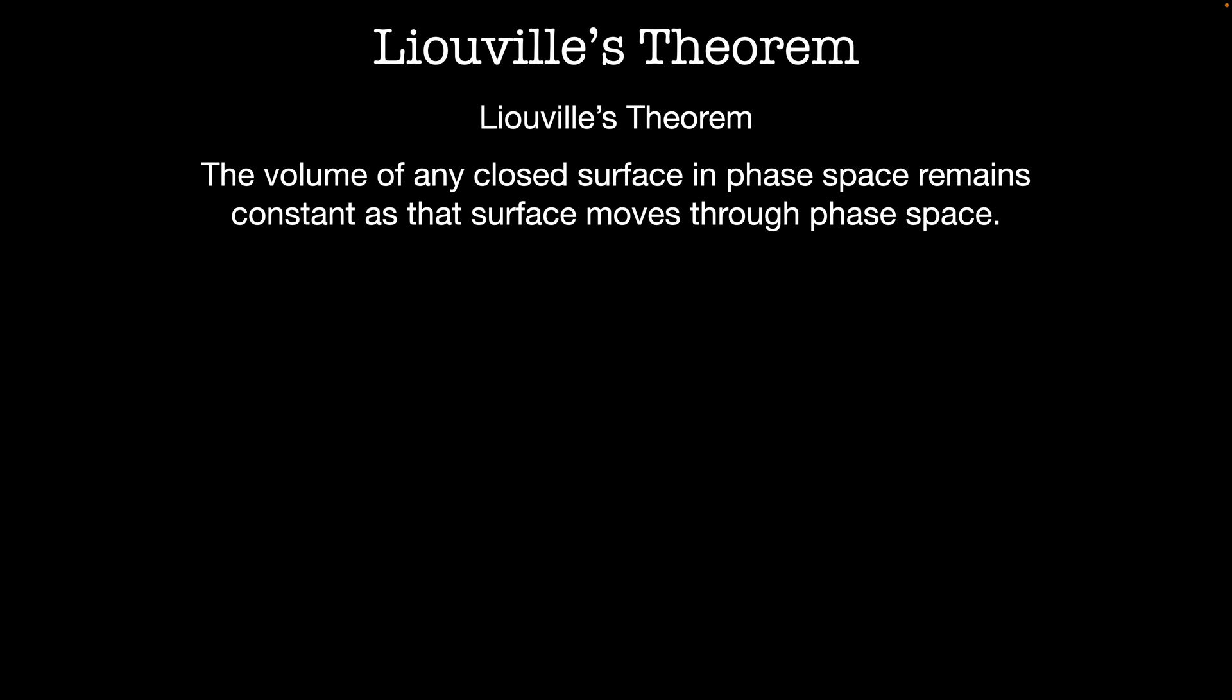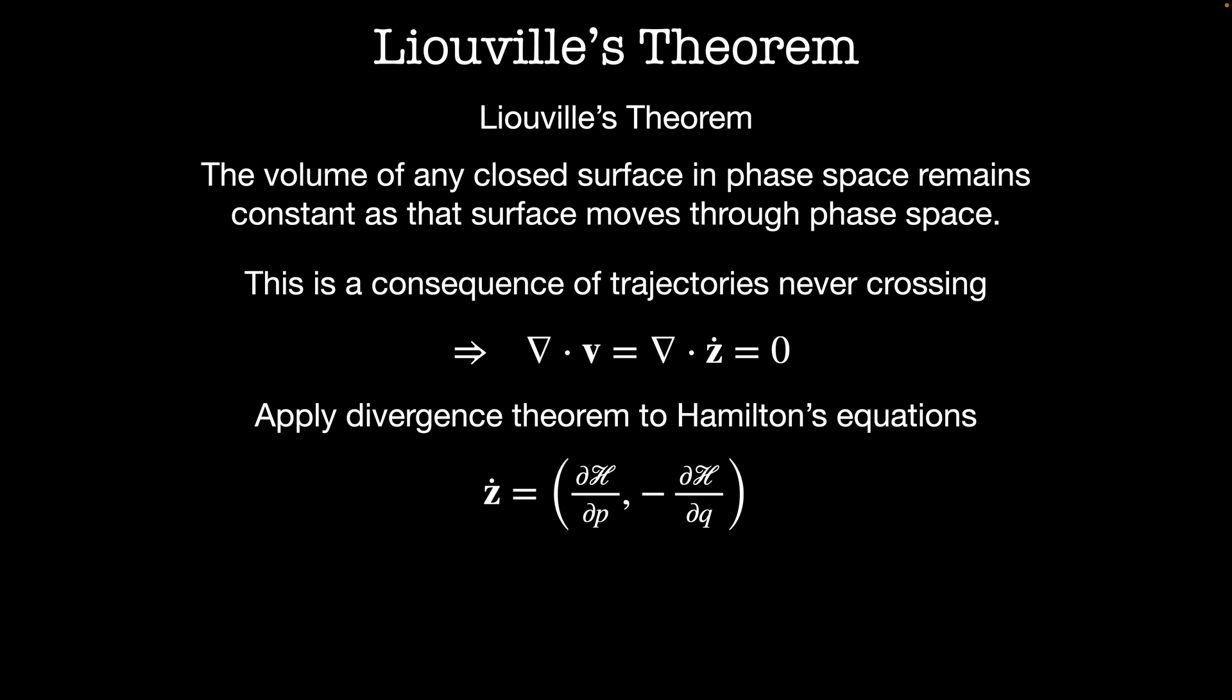The statement we just made is actually a theorem by Liouville. The volume of any closed surface in phase space remains constant as that surface moves throughout phase space. It turns out this is a consequence of trajectories never crossing. The divergence of the velocity field, which is given by Hamilton's equations, z dot is equal to zero. We can show this explicitly by taking the divergence of Hamilton's equations, which are z dot equals dH/dp and minus dH/dq. When we take the divergence of this, we end up with d/dq of dH/dp plus d/dp of minus dH/dq. And these two terms cancel out and we end up with the divergence of z dot equals zero. This has a lot of consequences for constructing mechanics for Hamiltonian systems.